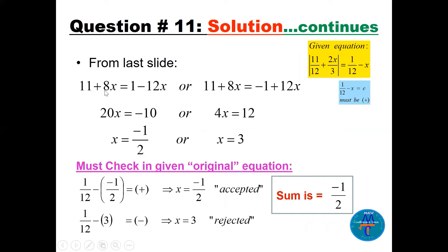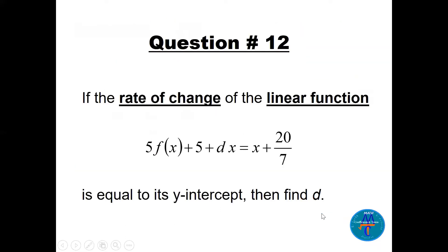From the first case: 20x on one side equals minus 10, divide by 20, so x equals minus 1/2. In the second case: 4x equals 12, so x equals 3. Check each in the original equation — remember c must be positive. Substituting x = minus 1/2 gives 1/12 plus 1/2, which is positive, so we accept it. Substituting x = 3 gives 1/12 minus 3, which is negative, so x = 3 is rejected. The sum is only minus 1/2.